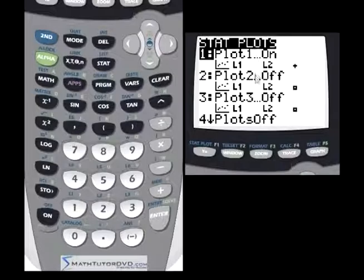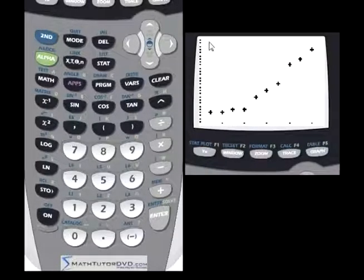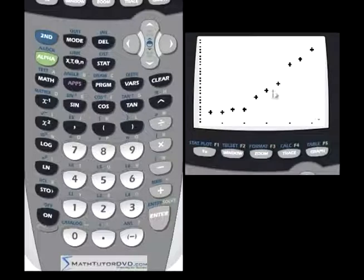And by the way, you could add another function here, enable it, turn it on, link it to another pair of lists, and set it to a square, for instance, if you wanted to, instead of the plus sign. And when you did that, then you would see the other data plotted right alongside it, and they would be represented by little squares instead of little plus signs. So that's kind of neat.